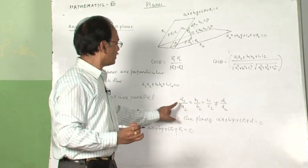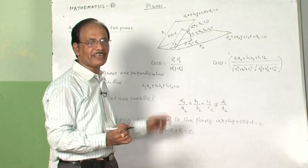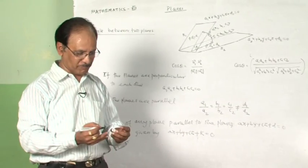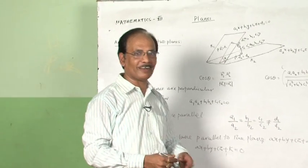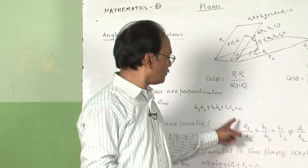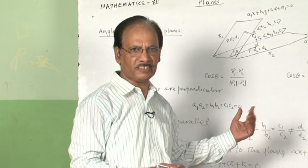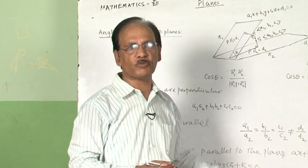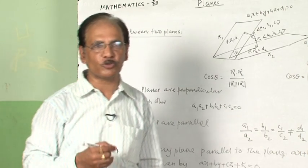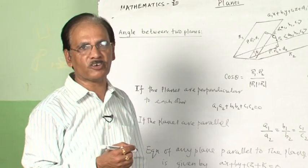Please remember this condition - it is somewhat identical to what we have seen with two-dimensional lines. When two lines are parallel, ax + by + c = 0, the coefficients will be proportional and that will not be equal to the ratio of the constant term.